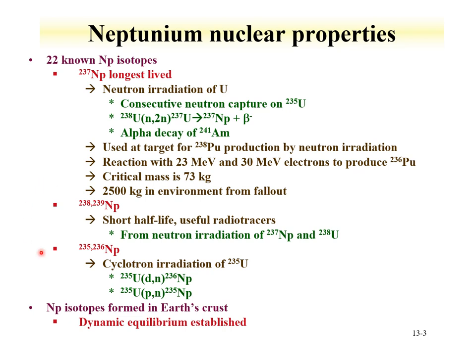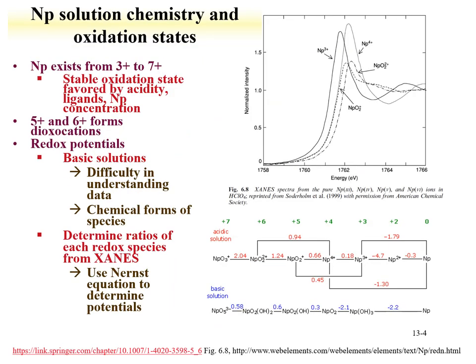Neptunium-235 and -236 can be produced from cyclotron irradiations of uranium-235. Neptunium has a range of oxidation states available in solution, from +3 to +7. The most stable oxidation state is +5; however, other states can be stabilized based upon acidity, ligands available, and even the neptunium concentration.